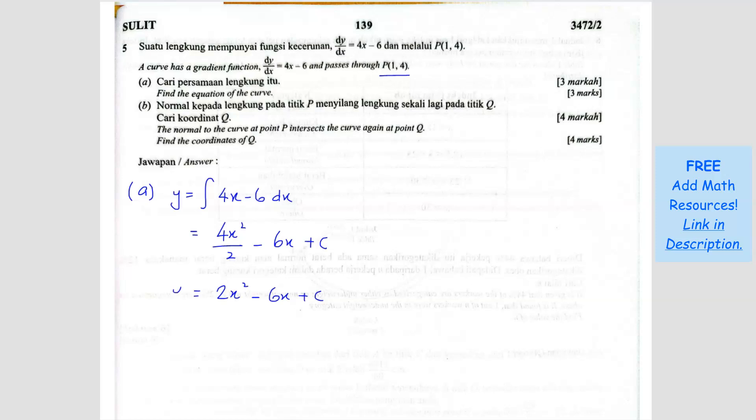So this is the y equation, but you cannot stop there because you need to find C. So we can put in the P value because it passes through P. So the x value is 1 and the y value is 4.